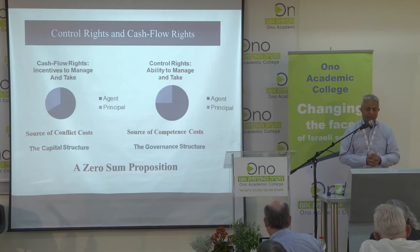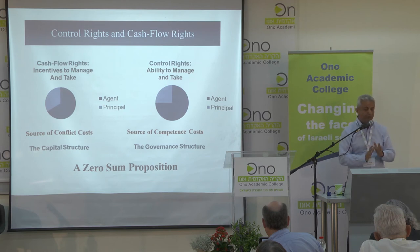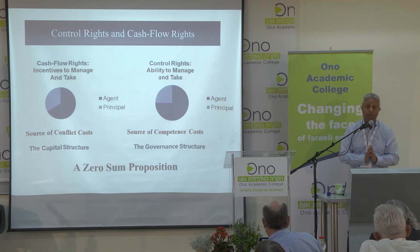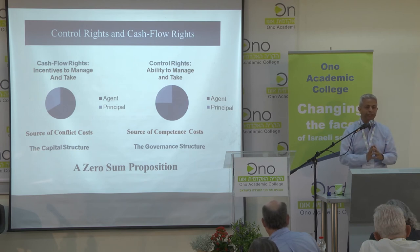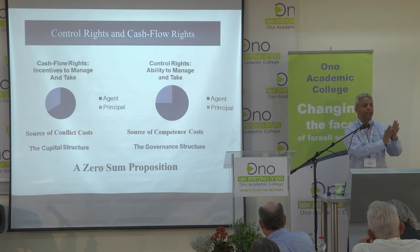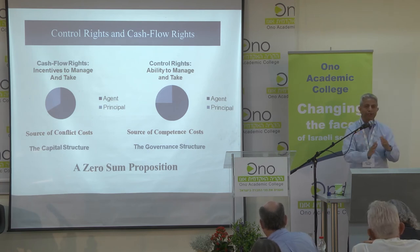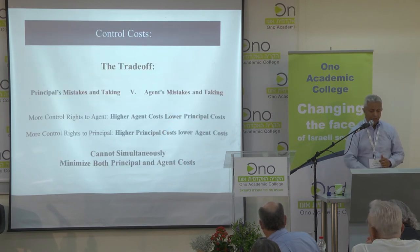One determines the capital structure, the other determines the governance structure. The most important thing to realize is that this is a zero-sum proposition. Whatever rights exist for a corporation or any other entity, you can only divide them — from 100% owned by the principal down to however many you give the agent. There is no more than that. It creates a trade-off between principal's mistakes and takings and agent's mistakes and takings.